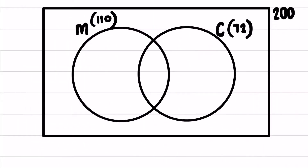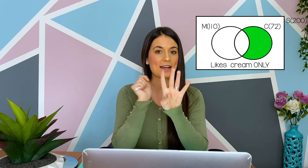Within the full rectangle we have 200 people, 72 in the cream circle and 110 in the milk circle. We need to fill in four pieces of information: the sample space outside the circles, the milk-only region, the intersection, and the cream-only region. That means we need to determine who doesn't like milk or cream, who likes milk only, who likes cream only, and who likes milk and cream.